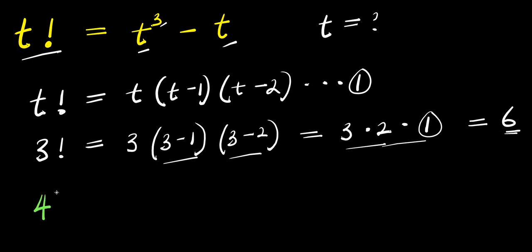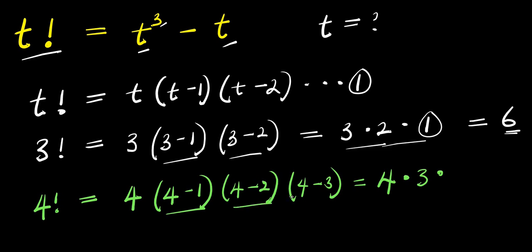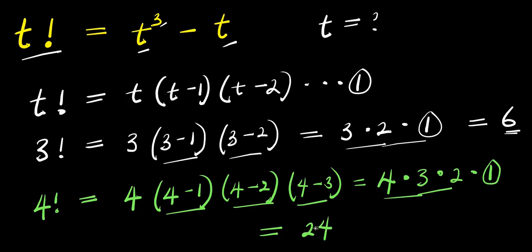Now if you also have 4 factorial, this means 4 times 4 minus 1 times 4 minus 2 times 4 minus 3. This gives you 4 times 3 times 2 times 1. So 4 times 3 is 12, 12 times 2 is 24. So that is 4 factorial.